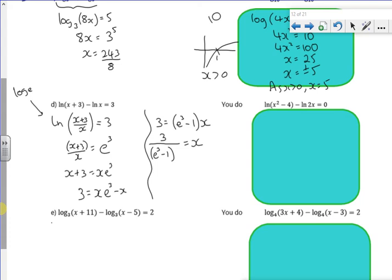Let's have a look at this next one then. So I've got a minus, so I'm going to combine it as x squared minus 4 all over 2x is 0. And then to get rid of ln, I'm going to do e. So I've got x squared minus 4 over 2x is e to the power of 0. Anything to the power of 0 is 1.